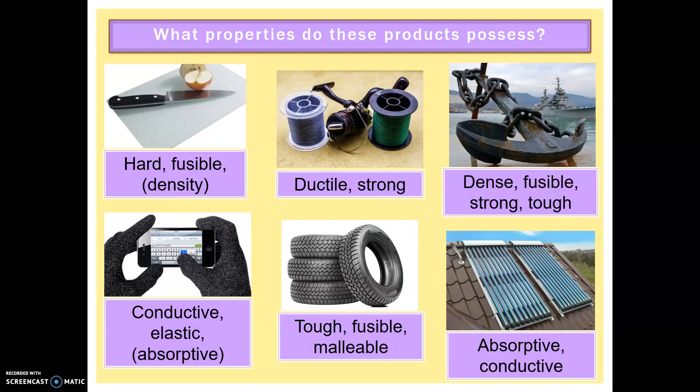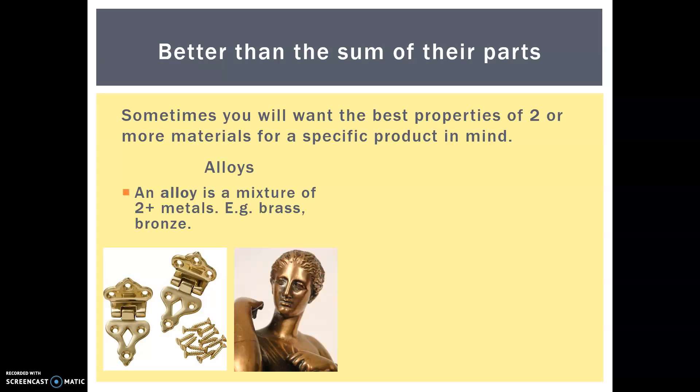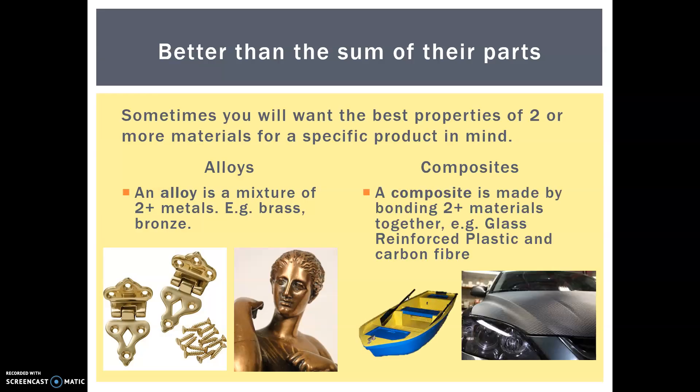Okay, so lastly, sometimes you want the best of two or more properties or materials rather for a specific product. So alloys are a mixture of two or more metals or materials. So brass and bronze are both types of alloys. Composites are made of bonding two or more materials together, so for instance glass reinforced plastics and carbon fiber.